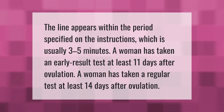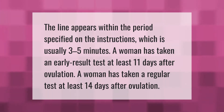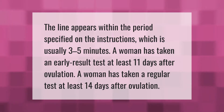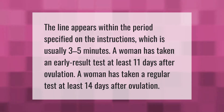A woman has taken an early result test at least 11 days after ovulation. A woman has taken a regular test at least 14 days after ovulation.